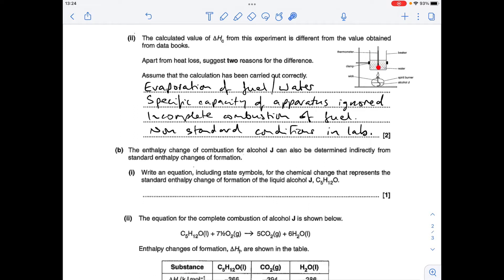So the first one I've gone for is the evaporation of the water or the evaporation of the fuel from the hot wick. Next one is the specific heat capacity of the apparatus has been totally ignored. So obviously some of the heat from the reaction is heating up the beaker. Likewise, some of the heat from the reaction is heating up the thermometer, but we've totally ignored that and assumed that all the heat from the reaction has gone into the water.